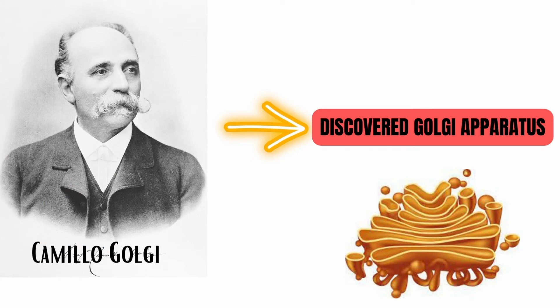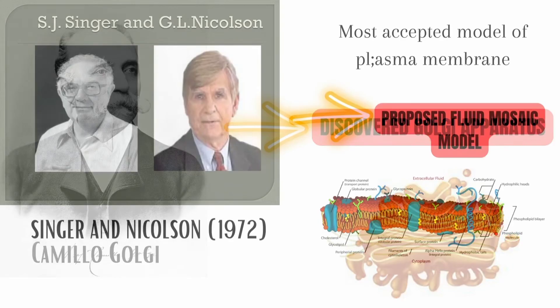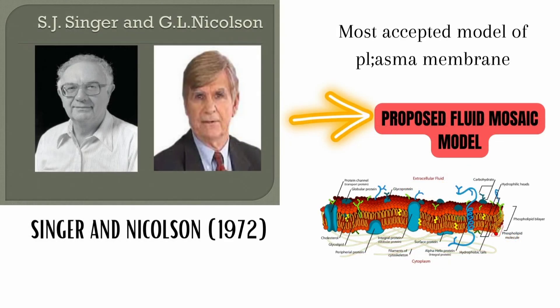Next is Camillo Golgi — from his name itself you can guess that he discovered the Golgi apparatus. The last one: the most accepted model of the plasma membrane, the Fluid Mosaic Model, was proposed by Singer and Nicholson in 1972.